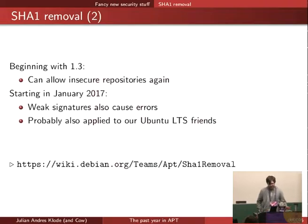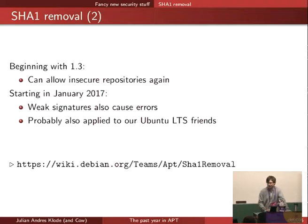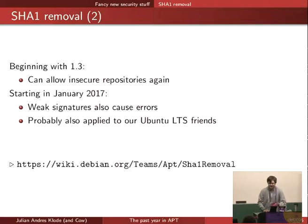In January 2017, we will start to treat the weak signatures of the release files as errors as well, because that's a good point — the browsers are doing it too, so that's the common SHA1 deprecation point. This will probably also apply for the Ubuntu LTS release, which already has this whole thing enabled, but we can think about that later.